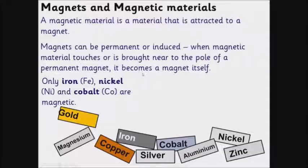First up, magnets and magnetic materials. A magnetic material is a material that is attracted to a magnet, so a material doesn't have to be a magnet in order for it to be a magnetic material. Magnets can be permanent or induced. When magnetic material touches or is brought near to the pole of a permanent magnet, it becomes a magnet itself.